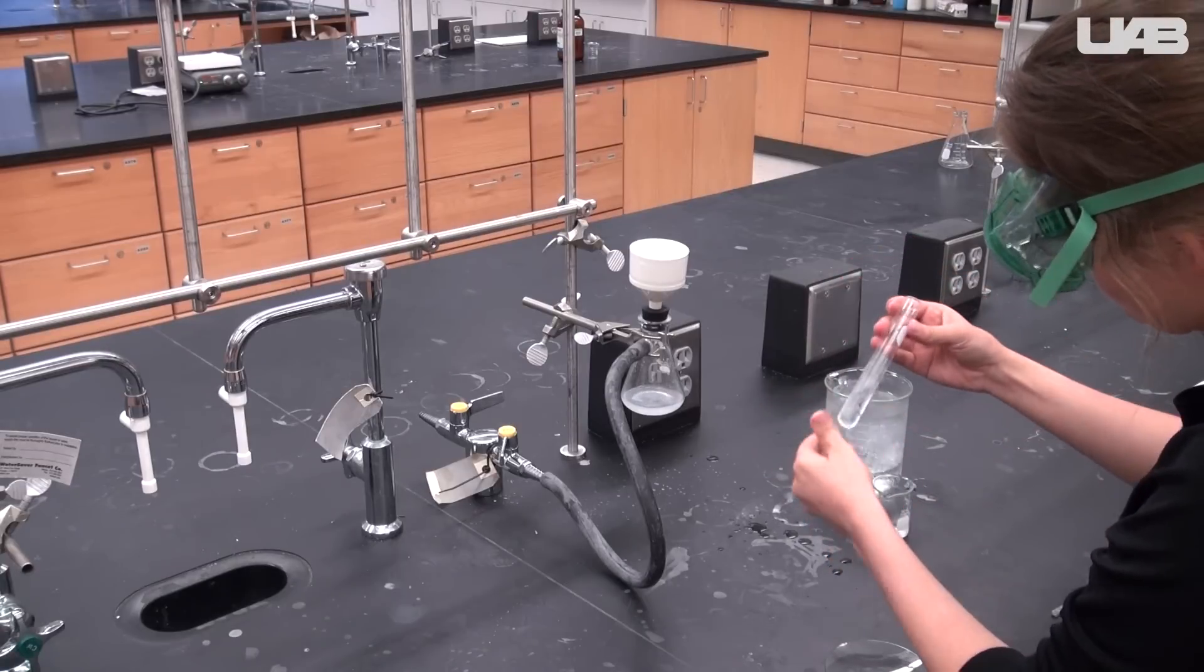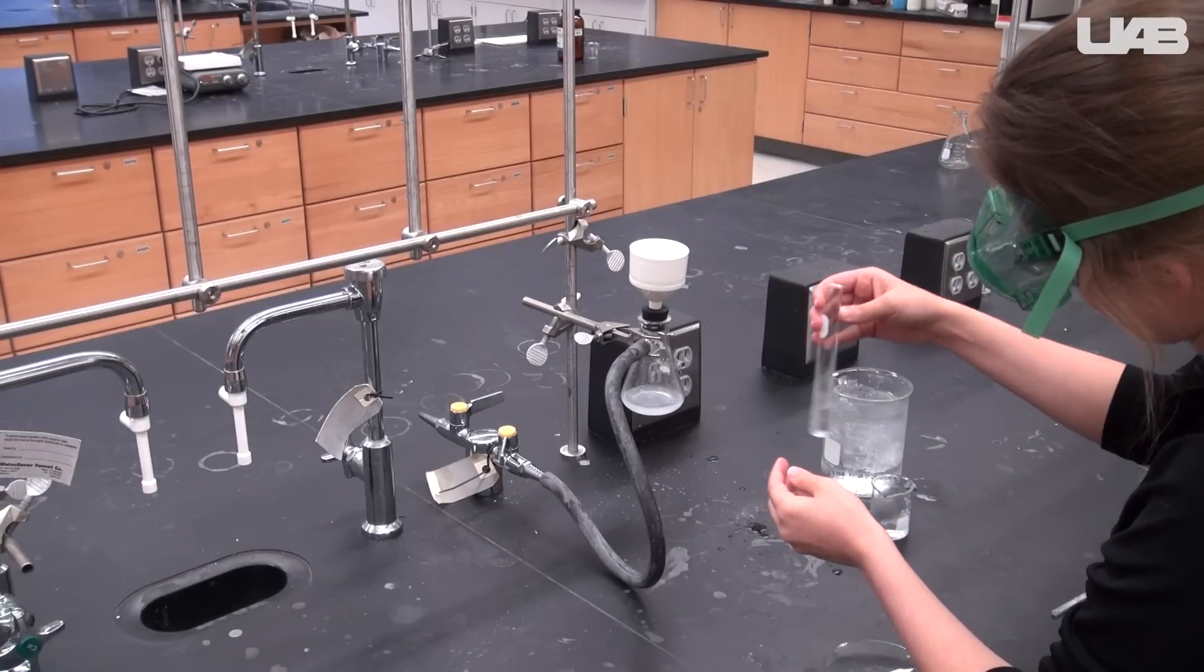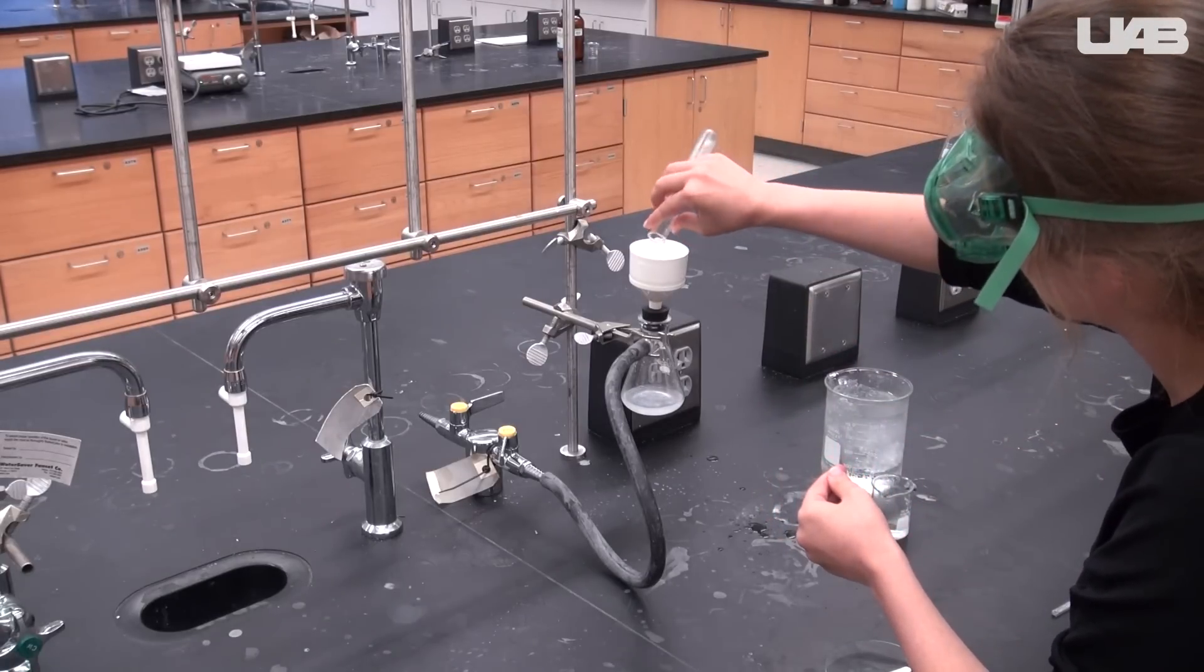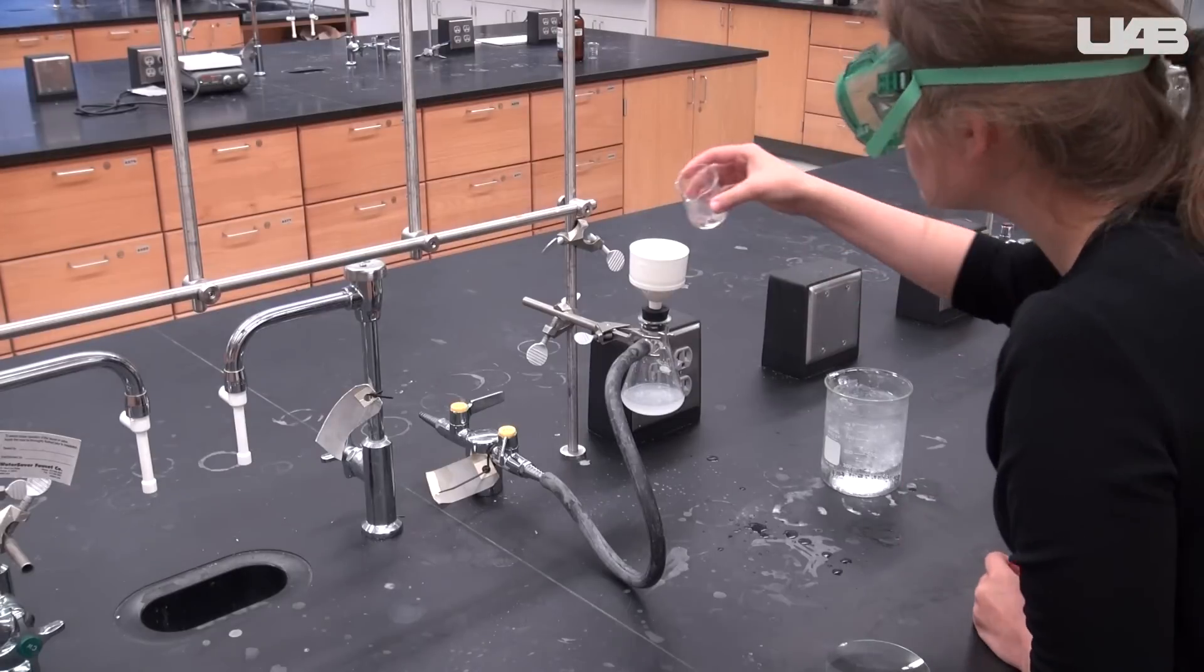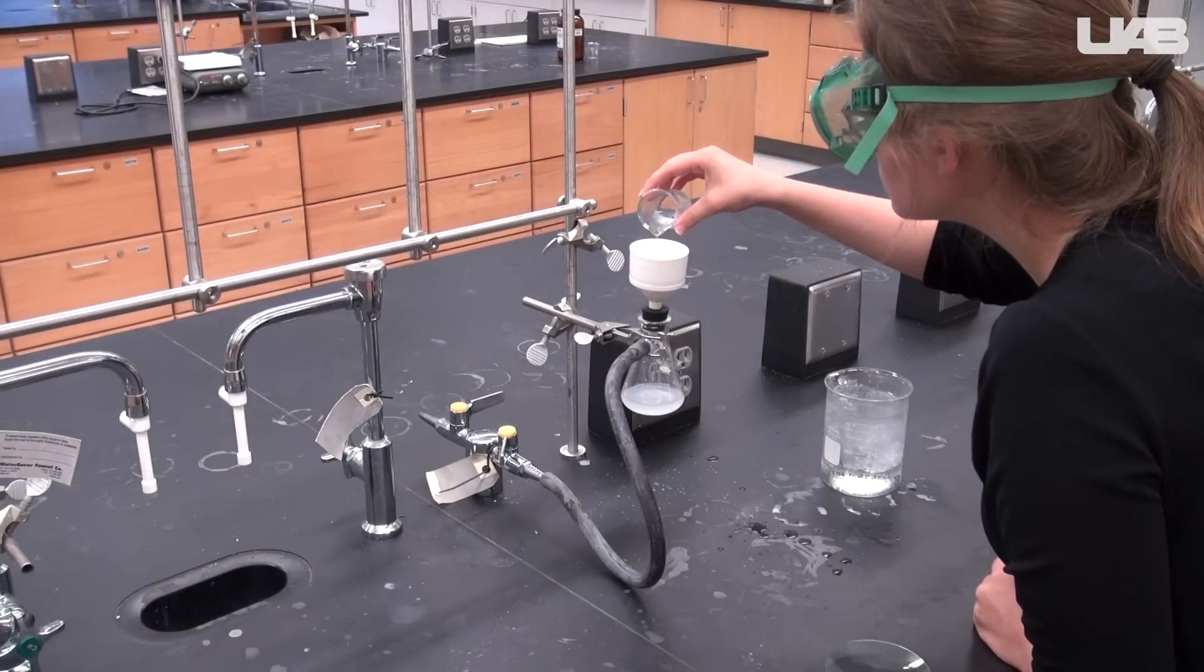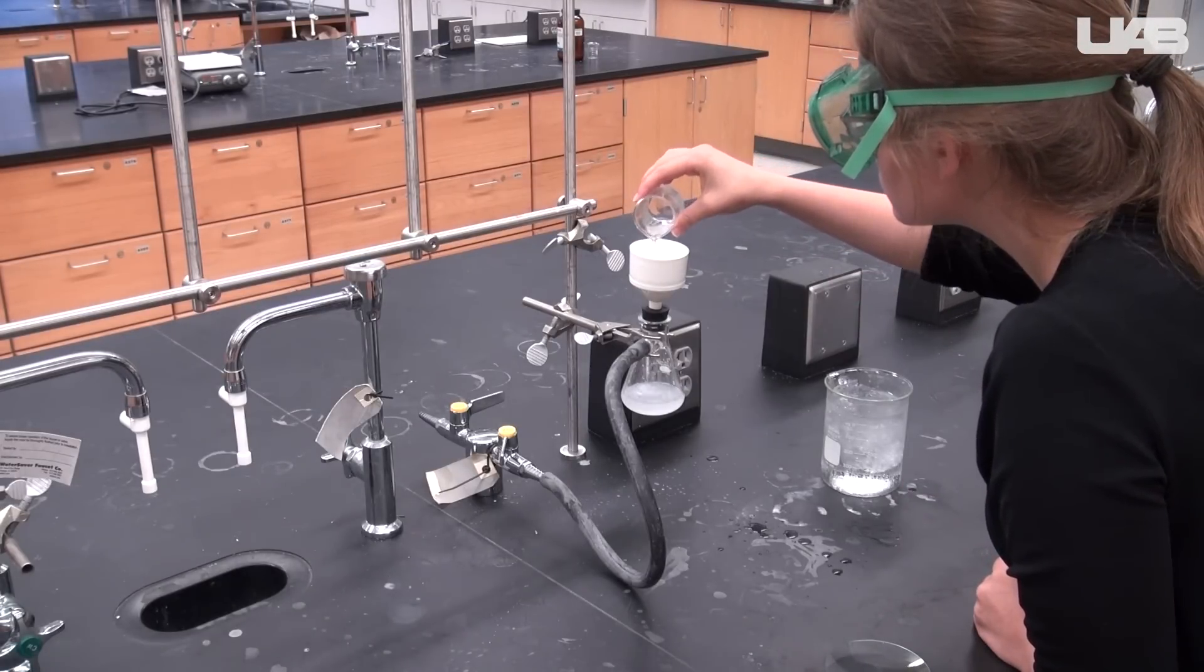You will use portions of the chilled distilled water to wash out any remaining crystals from the test tube. Use small portions of the distilled water to wash the crystals. Continue to pull air through the sample until it is dry.